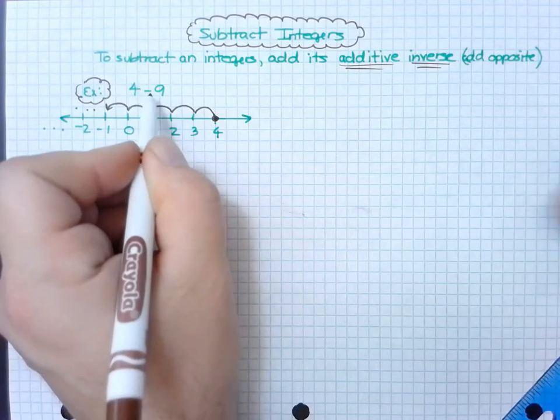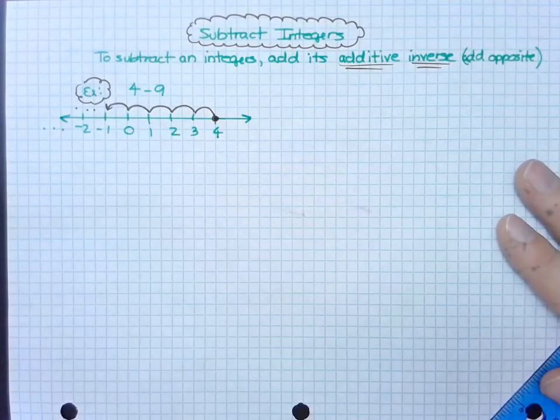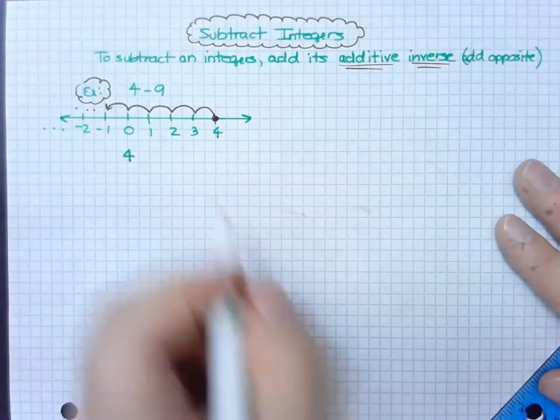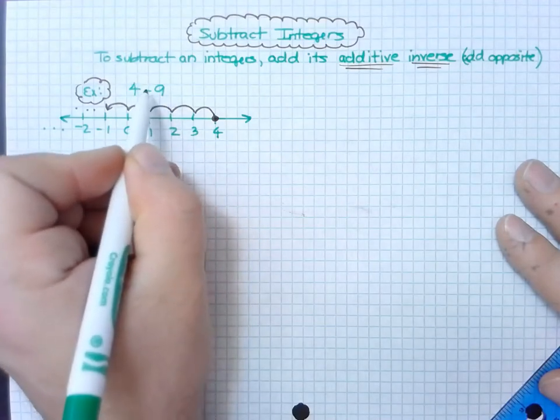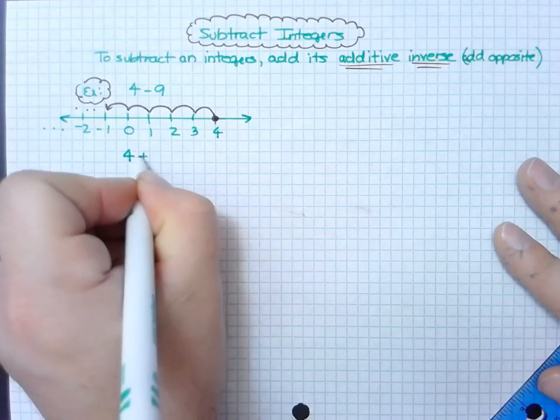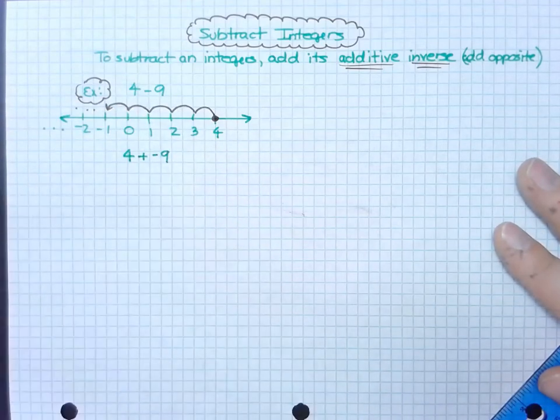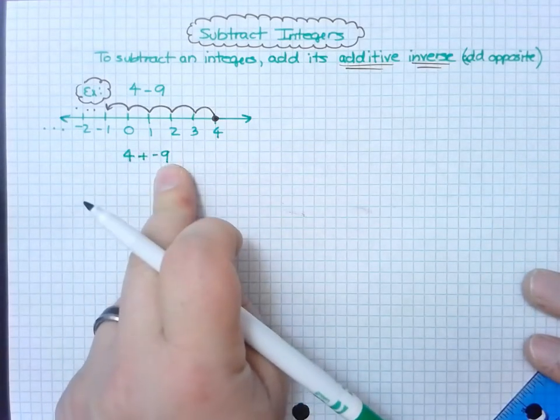Okay, well let's see how I can understand this a little bit easier. I can take the first number copied down and then take the additive inverse of the next number, which is a minus 9. So what's the opposite operation of minus? A plus. Which means I have to make the opposite 9 a negative 9. And now I can see that I have four counters, I'm adding nine negative counters, which gives me a negative 5.